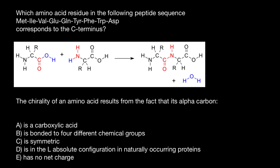Now let's take a look again at this sequence. How do we know whether this amino acid is the first one and this is the last one, or this is the first one and this is the last one? So we need to determine which one has the N-terminus and which has the C-terminus.